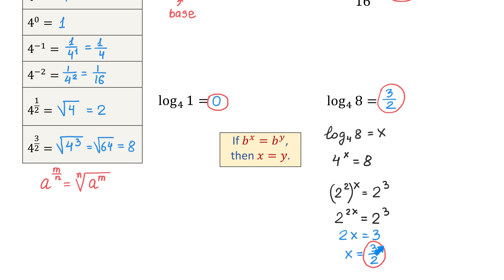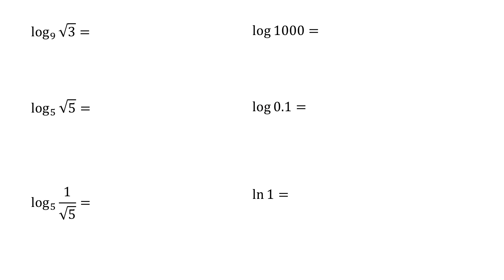This is the same result we got above. Now, let's evaluate a few more logarithms. The first one is log base 9 of square root of 3. So, 9 to what power is square root of 3? To evaluate this logarithm, we can use the same method we used in the previous problem. Let this logarithm be equal to x. Then, when we rewrite it in exponential form, we will get 9 to the x power equals square root of 3.